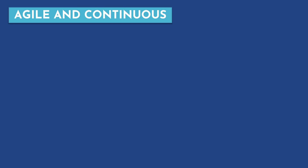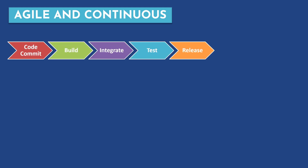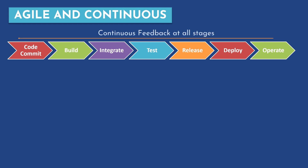Let's see what these terms mean in detail. A software development lifecycle process usually involves these steps: code commit, build, integrate, test, release, deploy, operate. This is a complete SDLC lifecycle, and continuous feedback at all stages is provided from each stage. Looking at the code commit and build part — this is where Agile operates. Agile development is mainly concerned with the development; it does not have any say in operationalizing, testing, or releases to production.